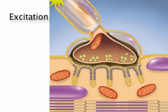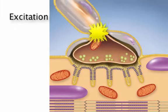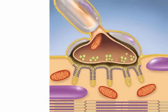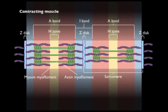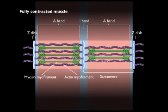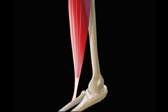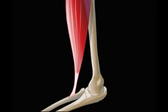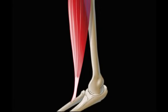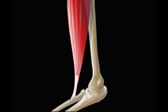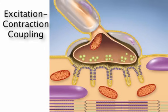We know that excitation is how the nervous system stimulates an action potential in the muscle fiber sarcolemma. In order for a skeletal muscle to function, it must contract, which means it gets shorter. And when a muscle gets shorter, the skeleton moves at the joint it crosses. The series of events that links these two phases together is called excitation-contraction coupling.